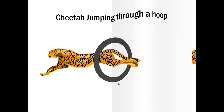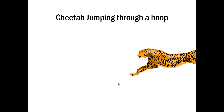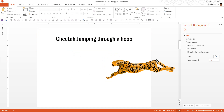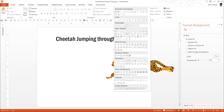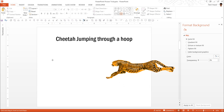Let us see how we can create this beautiful effect from scratch. To make it easy, I have got this cheetah ready to jump through the hoop. Now all that we need to do is to create the hoop. For this let me go to Auto Shapes menu. And under Basic Shapes, I am going to choose this tool called as Donut tool.